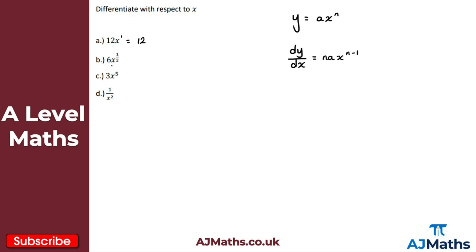For part b, 6x to the power of a half: we apply the rule. Six times a half gives us three, and then x to the power of a half minus one, which is minus a half. So the answer is 3x to the power of minus a half.